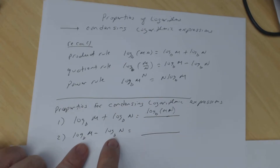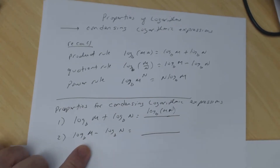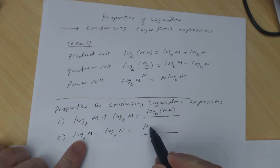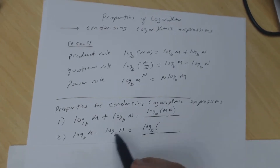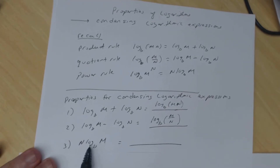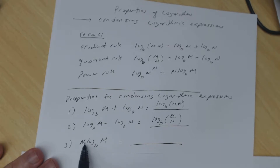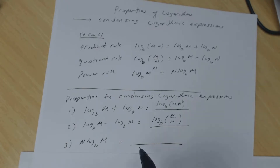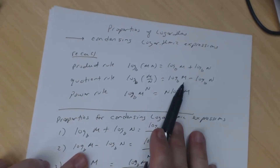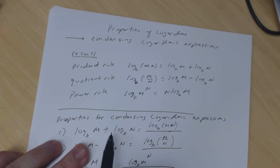The difference of two logs with the same base — the bases have to be the same, though the arguments don't — gives the log of the quotient, where the first argument is the numerator and the second is the denominator. A factor times a log, like n times log base b of m, condenses to log base b of m to the n power. Condensing means writing as a single logarithm — going from two logs to one log.